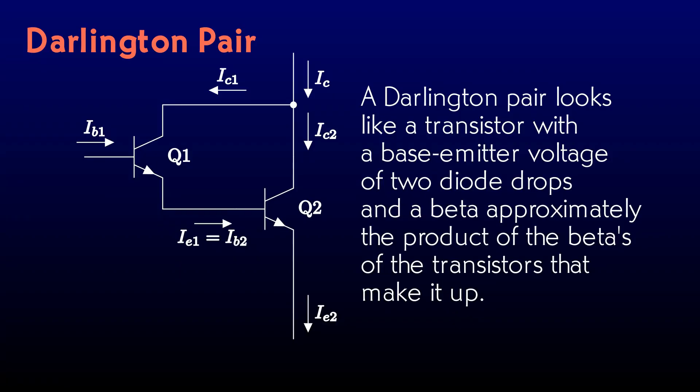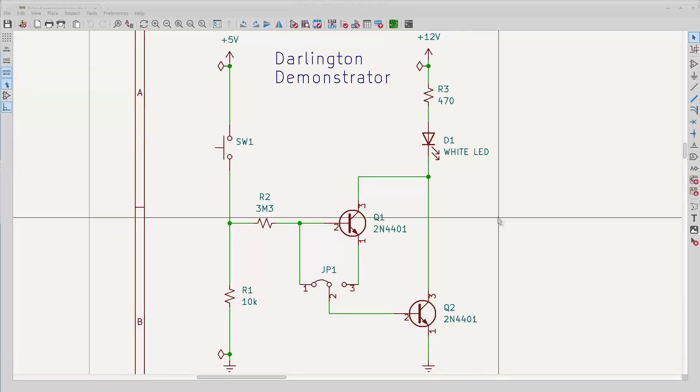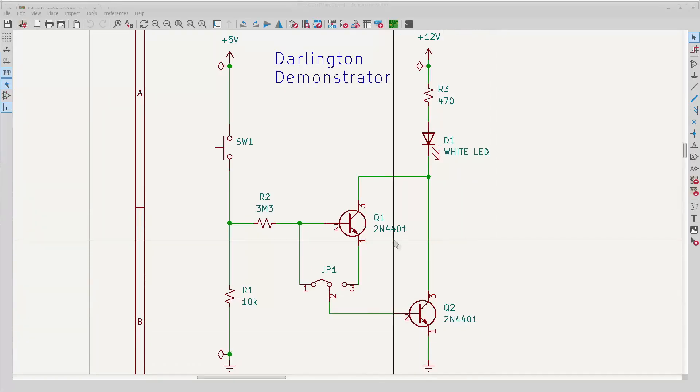Let's build one on the breadboard and see it working. Here's what I'll breadboard. There's the Darlington pair that we looked at. I'll send it a 5 volt signal through a 3.3 megaohm resistor to simulate a high impedance source. And I'll load it with a white LED with the dropping resistor making it draw about 20 milliamperes.